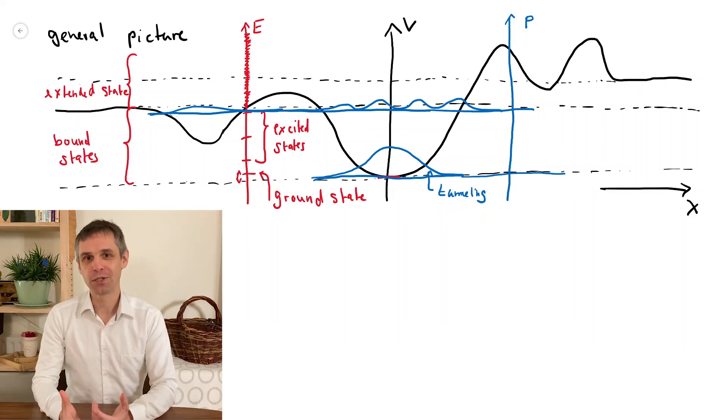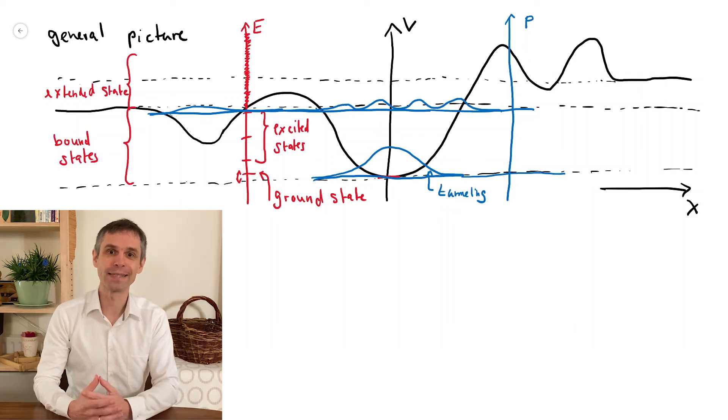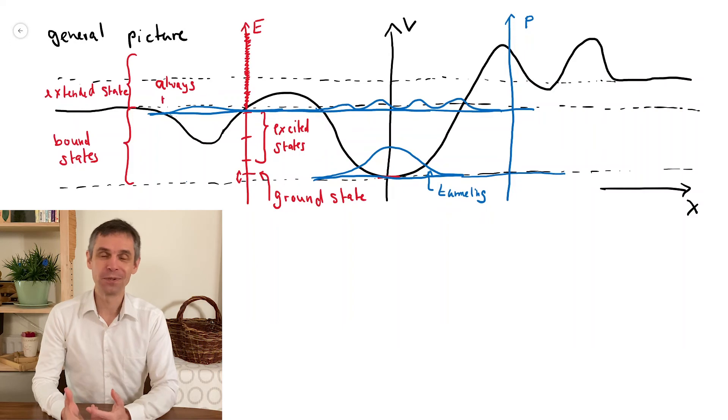So in a general potential, we may have this situation here where there is a range of energies where the particle can only escape to one side. So coming from there, it will always be reflected.